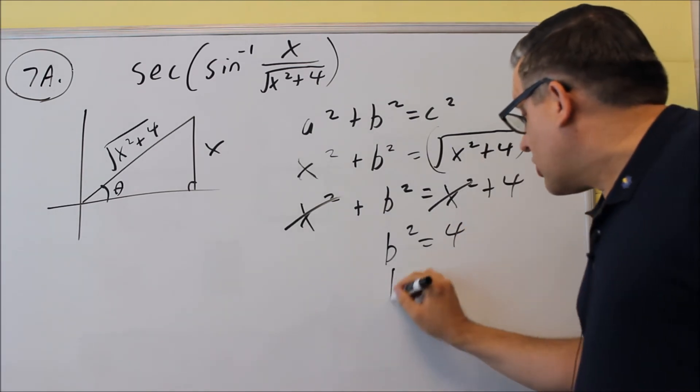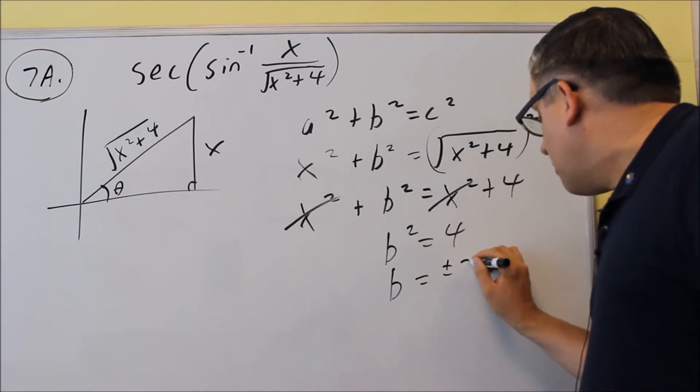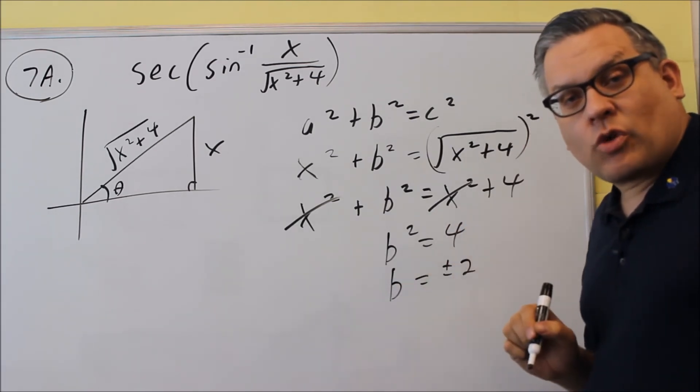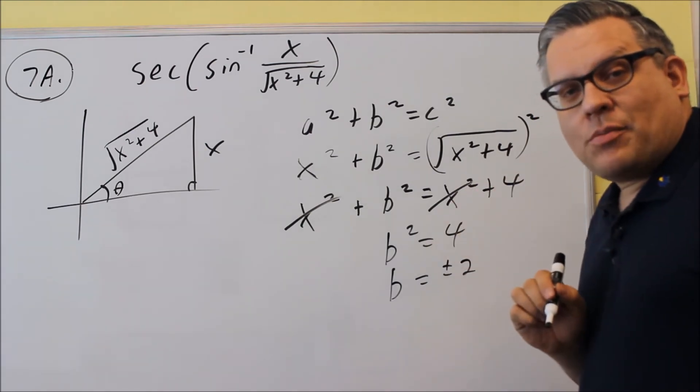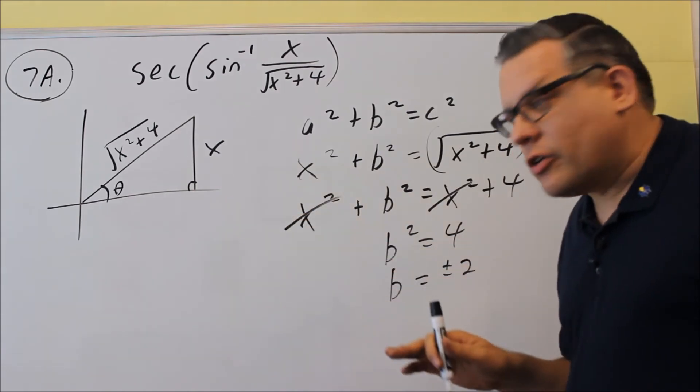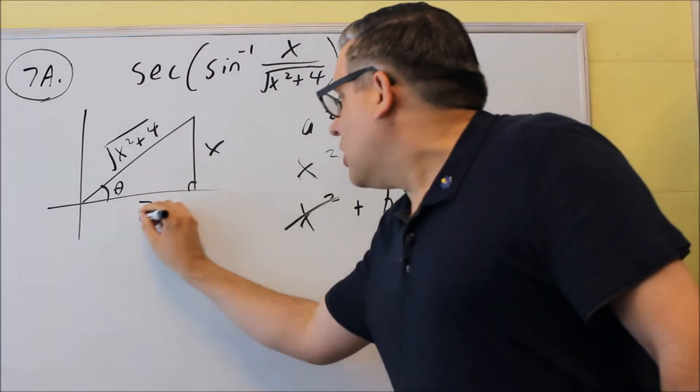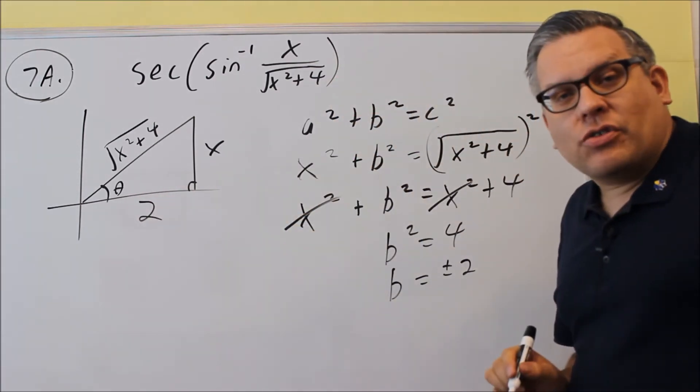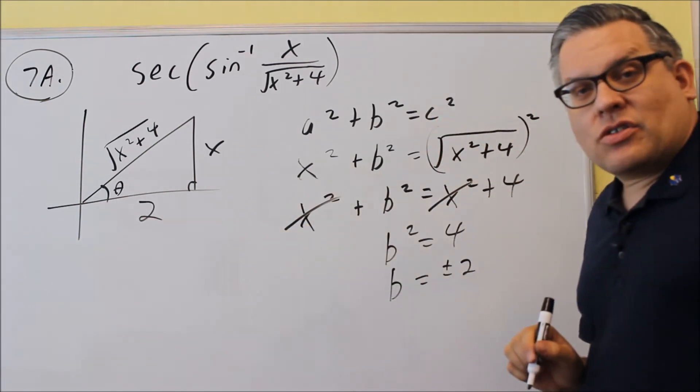You take the square root of both sides. And again, normally you do get plus or minus 2 whenever you take the square root. But because we got that part in the instructions that says assume x is positive and you're in the first quadrant, that means that this is going to have to be positive 2 because it's along the positive x-axis.